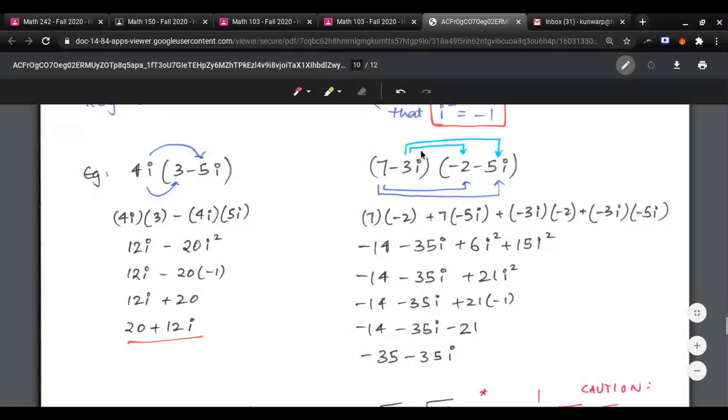Similarly here, when you foil out, there's going to be 4 products. And then you combine the i terms, the i squared terms, and then replace it by negative 1. Then you get a real number, which you can again combine. And in the end, if you notice, this is a plus bi, right? So it is a complex number.